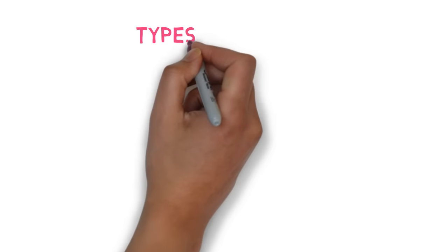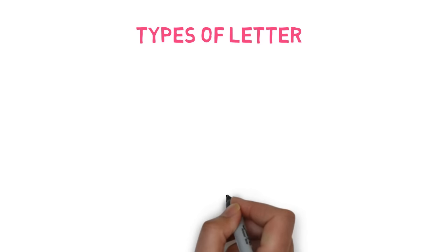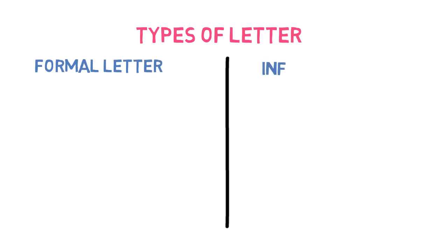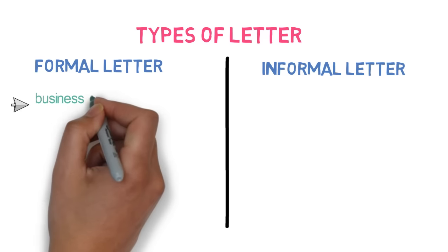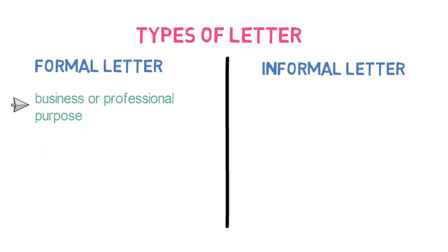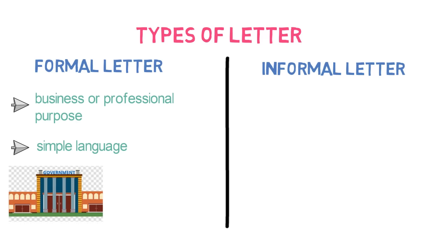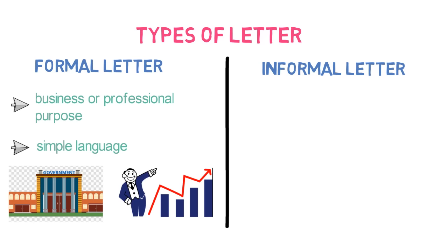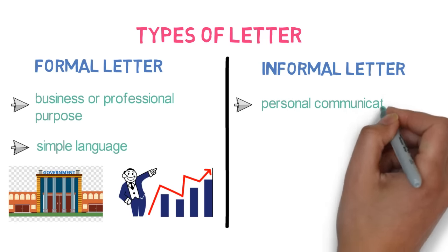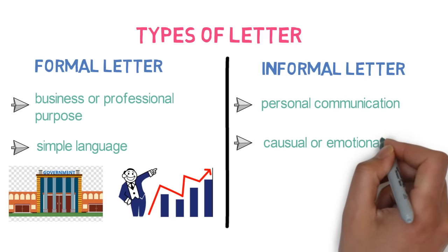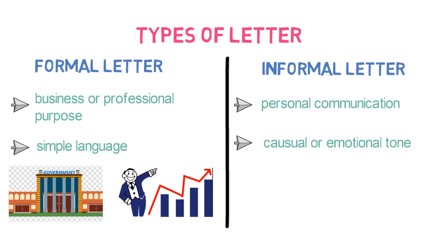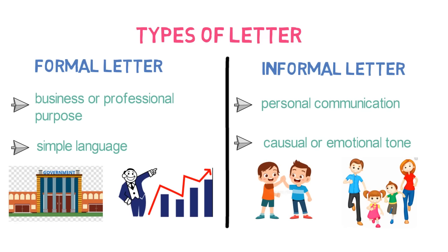Now, let's look into the different types of letters. Letters are mainly divided into two types: formal letters and informal letters. A formal letter is written for business or professional purposes with a specific objective in mind. It uses simple language that can be easy to read and interpret. Formal letters are written to government departments or businesses instead of a known individual. An informal letter is written for personal communication. It uses a casual or emotional tone. Informal letters are written to a friend or close family member instead of businesses or government.